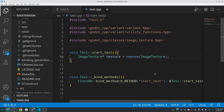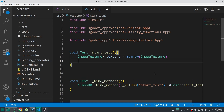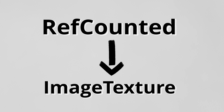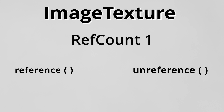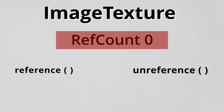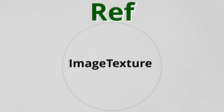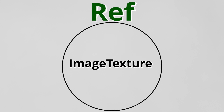This will work and give no error, but you should never do that. As I mentioned, ImageTexture inherits from RefCounted, which has methods to increase and decrease the ref count number. The important part is that ImageTexture does not automatically call these methods, and it does not automatically delete itself when the ref count reaches zero. There is another class responsible for doing these things, and that class is called Ref.